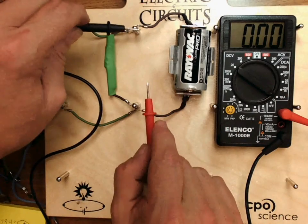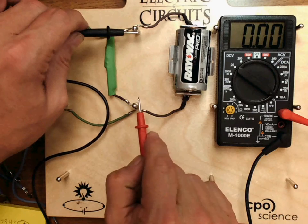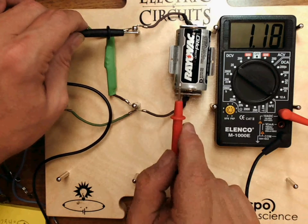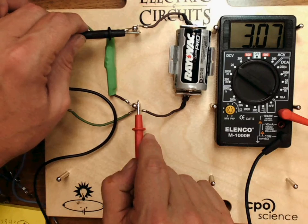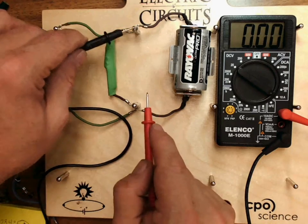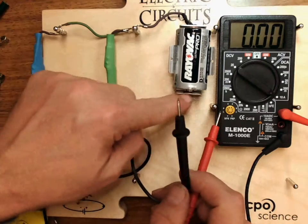Now if I were to measure this way I am short circuiting the battery. Notice it went up to 3 amps. Fortunately it doesn't damage this meter because this meter is capable of going up to 10. But I'm short circuiting the battery because the current is flowing out of here.